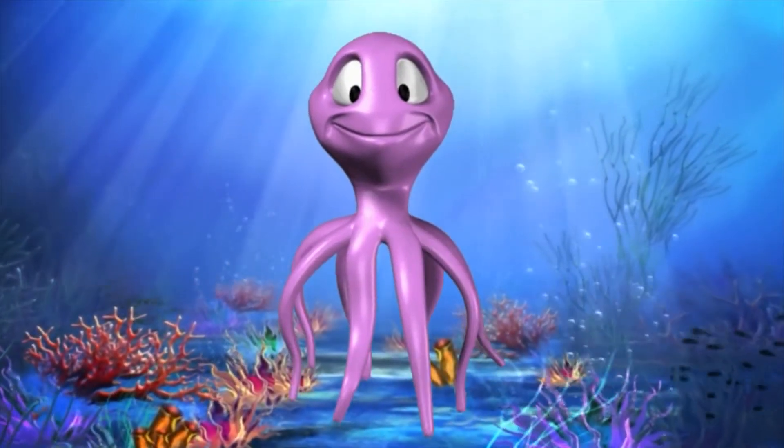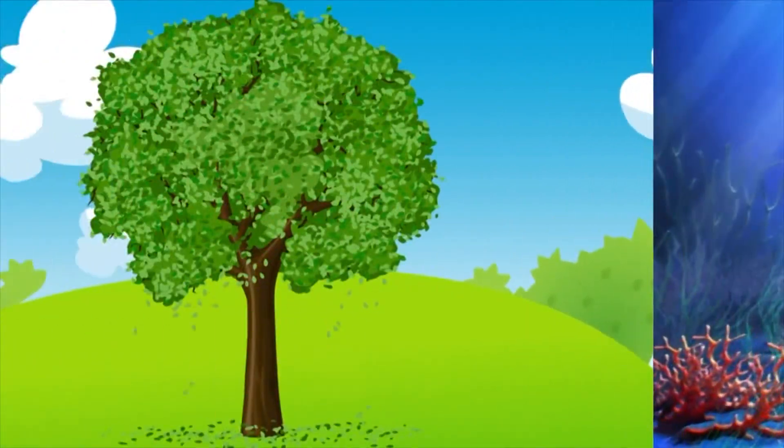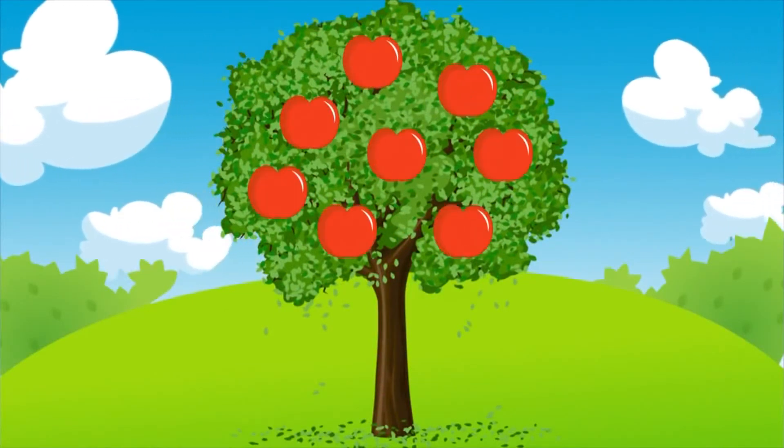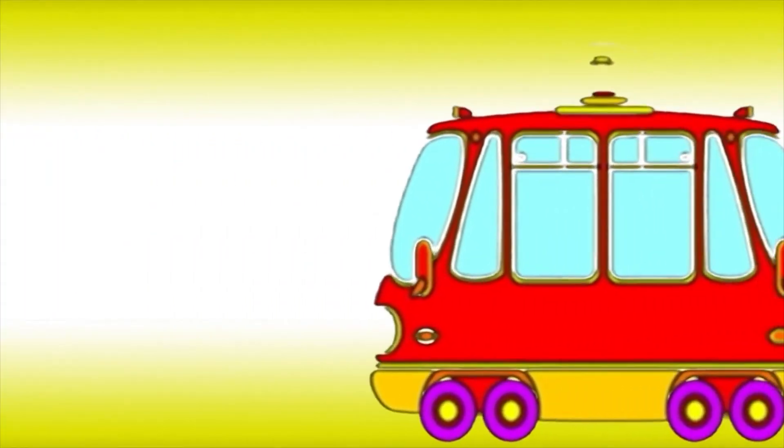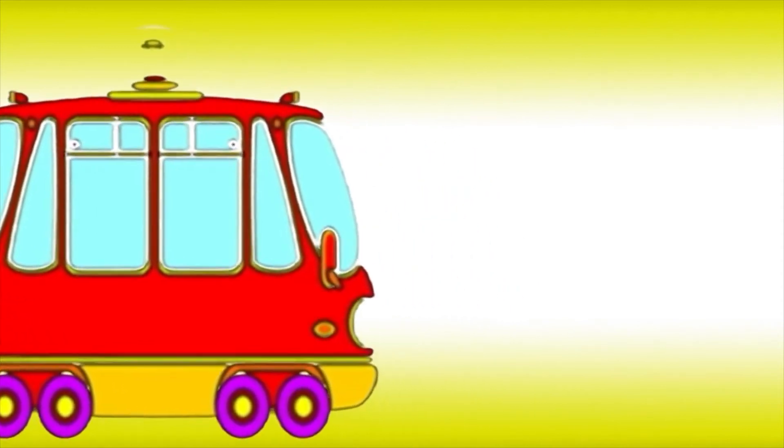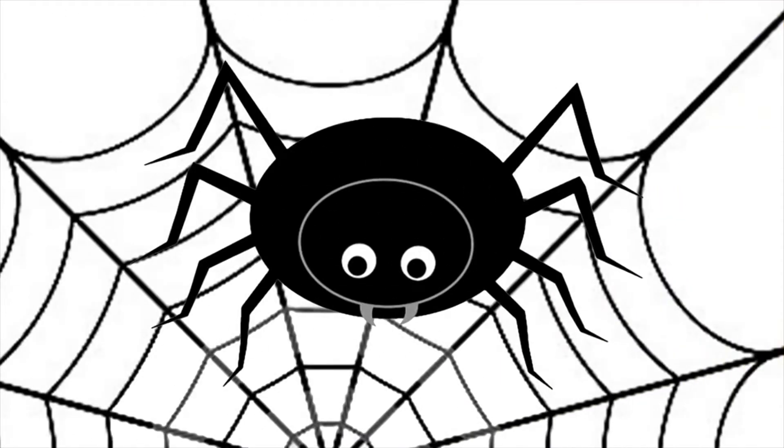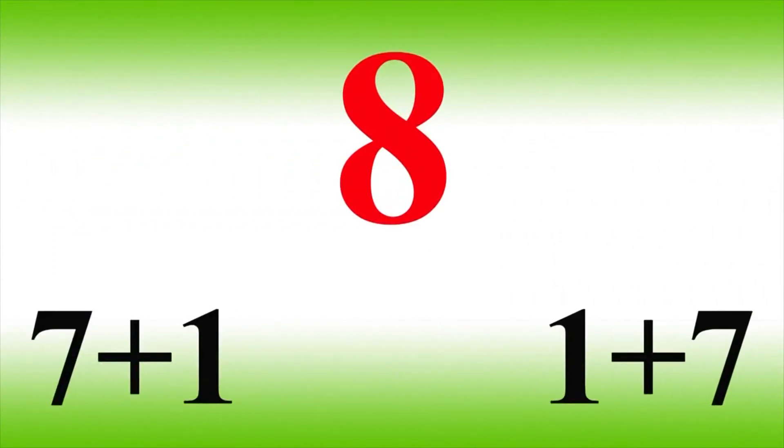An octopus has eight legs. There are eight apples on the tree. The tram has eight wheels. The spider has eight legs. Eight.